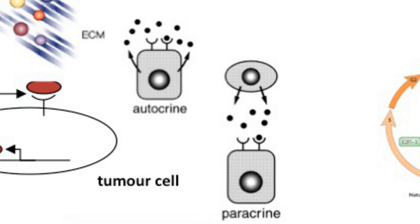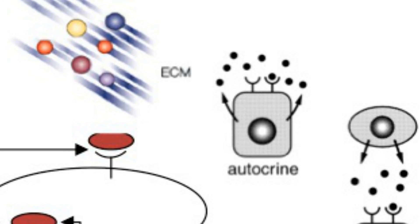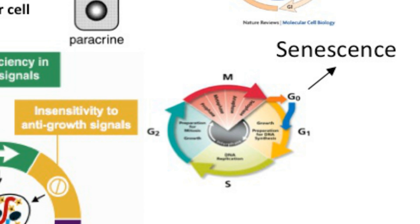Cancer cells can also stimulate other neighbouring cells to produce growth factors for them. The second hallmark is insensitivity to anti-growth signals. In this way, tumour cells bypass the G0 phase of the cell cycle and re-enter the cell cycle for another round of replication.